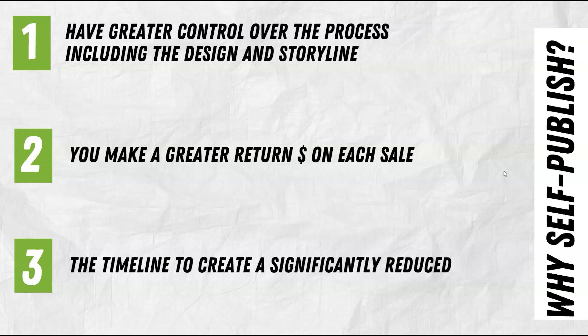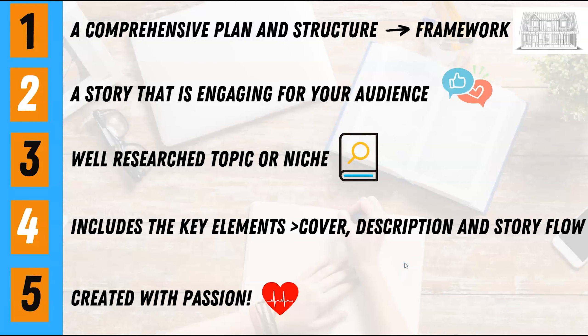When I published a book years ago with a publisher, I was getting around 25 to 30 cents per sale. But with books I create now, it can be anywhere up to $12 to $15 per sale — a significant difference. Timeline-wise, you can create a book within a week yourself, whereas with a publisher it could take anywhere between 6 and 12 months for that book to appear on the shelf.